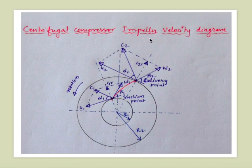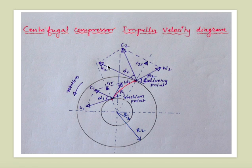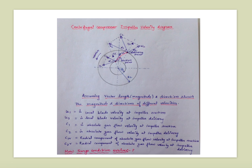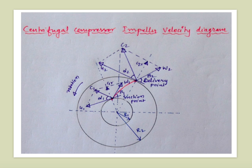The centrifugal impeller velocity diagram is shown in a larger zoomed view. You can see clearly: c1 and c2 as the resultant absolute gas velocities, the radial components c1r and c2r, and the tangential impeller velocities u1 at suction and u2 at delivery. w1 and w2 represent the actual direction of gas flow — w1 is the actual gas velocity direction at suction, and the resultant absolute velocities are c1 and c2 respectively.